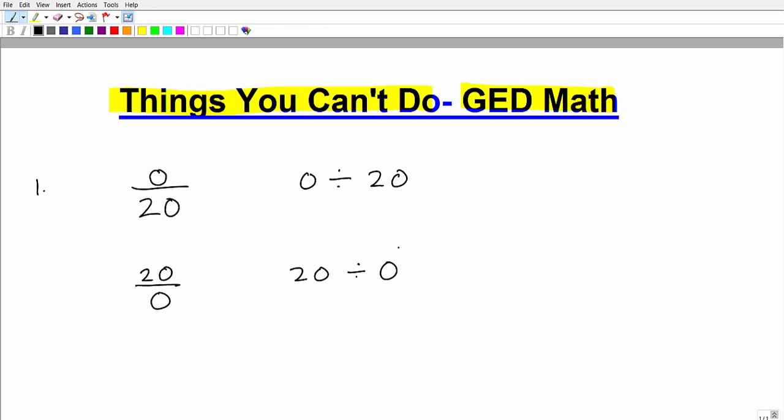They look similar, but obviously, they're inverses of one another. They're flipped. So, let's take a look at the first situation. What do you think the answer to this is, zero divided by 20? I'm going to give you a little pop quiz here. Zero divided by 20. What do you think the answer to this question is?